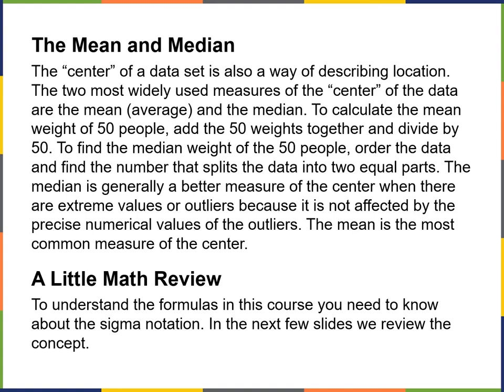To calculate the mean weight of 50 people, add the weights of 50 people together and divide by 50. To find the median weight of 50 people, order the data from smallest to largest — lightest to heaviest — and find the number that splits the data into two equal parts. That's the difference: the mean is the average of all values, while the median is the midpoint.